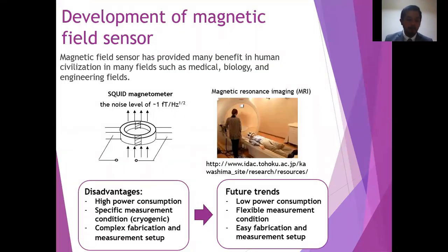Magnetic field sensor has provided many benefits in human civilization in many fields such as medical, biology, engineering, and many more. The future development of the magnetic sensor is a magnetic sensor which has low power consumption, can be used in flexible measurement condition, and easy to fabricate and to set up.